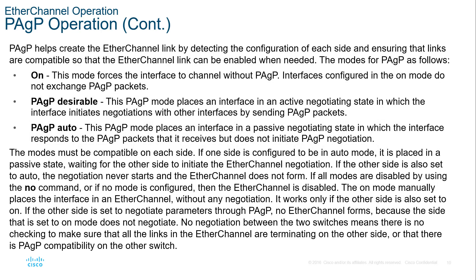When looking at PAGP, we have three modes: On, Desirable, and Auto. 'On' forces the interface to channel without PAGP. 'Desirable' places the interface in an active negotiation state where it initiates negotiations with other interfaces by sending PAGP packets. 'Auto' places the interface in a passive negotiation state where it responds to PAGP packets it receives but does not initiate or send them.